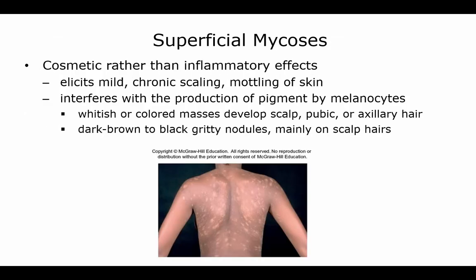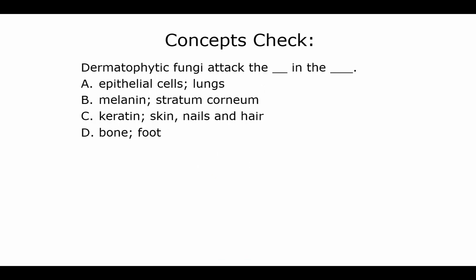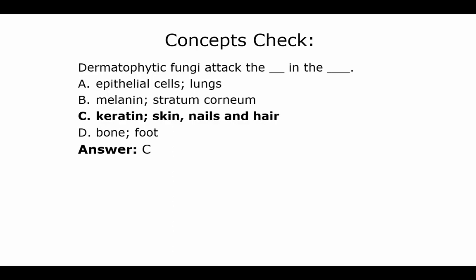Superficial mycosis are more cosmetic in nature. The skin becomes mottled and the condition interferes with the production of melanocytes, producing white or discolored patches on the skin. Dermatophytic fungi attack the keratin found in your skin, hair, and nails.